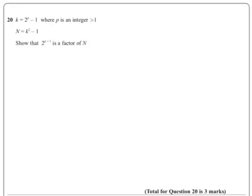Okay, we've got a proof using algebra type question here, which doesn't look very nice, but actually it's not too bad. K is this, and we've got to square it here. So we're going to rewrite N as this. Okay, 2 to the P minus 1 squared minus 1.